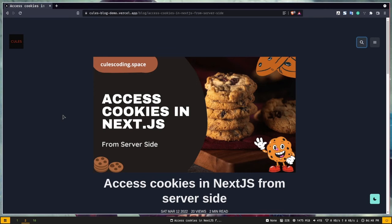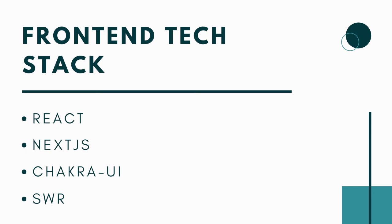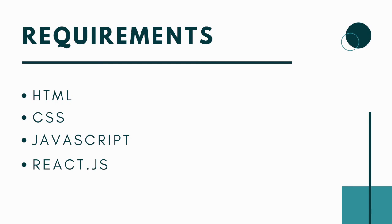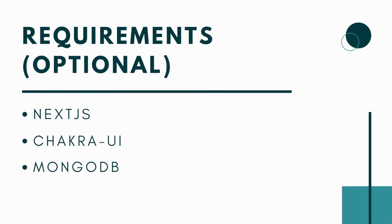Let's see the tech stack we are going to use. For the front end we are going to use React, or more specifically Next.js, which is a React framework, and Chakra UI for styles. We'll use the SWR hook to build the real-time view counter. For the back end we are going to use Next.js API routes, which is the serverless feature of Next.js, and MongoDB as our database. You need a basic understanding of HTML, CSS, JavaScript, and React. If you don't know those, this video course is not for you. Optionally, if you know Next.js that will be a great help, but don't worry if you don't — I will try to explain things as much as I can.